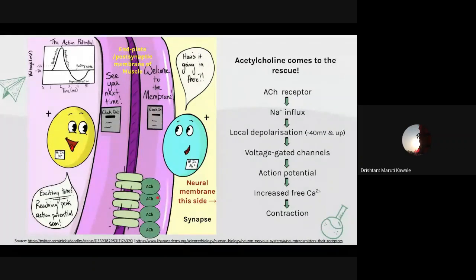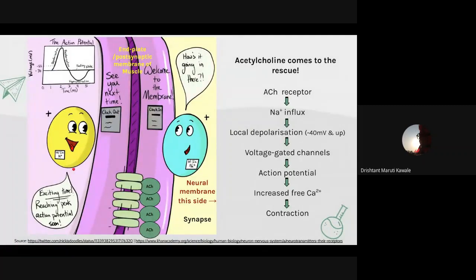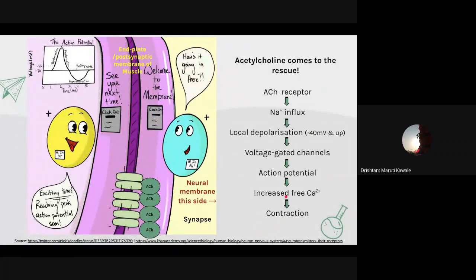Voltage-gated calcium channels opened, and calcium ions stored in vesicles of the endoplasmic reticulum were also released inside the cell. Once the voltage threshold was breached and sodium was inside, vesicles released calcium. The calcium ions interacted with contractile proteins — actin and myosin — to contract the muscle. Once calcium was associated with actin and myosin, the muscle contracted and shortened in length.